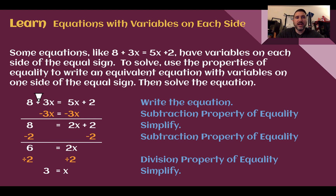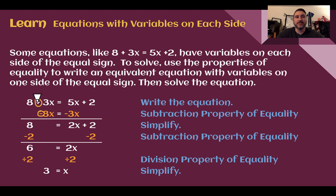If we're given 8 plus 3x equals 5x plus 2, we can eliminate the variable off of one side by doing the opposite of what we see. Since we see plus 3x, we can subtract 3x from both sides. It is eliminated off of that side, and on the other side, 5x minus 3x is 2x.